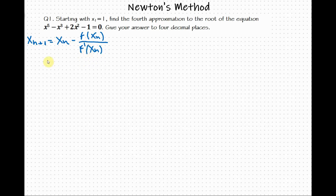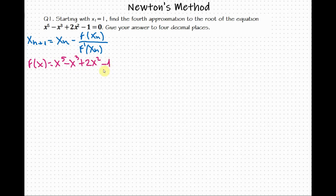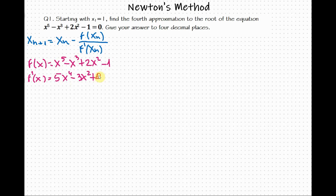Now let's go to our problem. We let our function be f of x equals x raised to the power of 5 minus x cubed plus 2x squared minus 1. From the general formula, we can see that we need the first derivative of the function. So we have f prime of x equals 5x raised to the power of 4 minus 3x squared plus 4x.